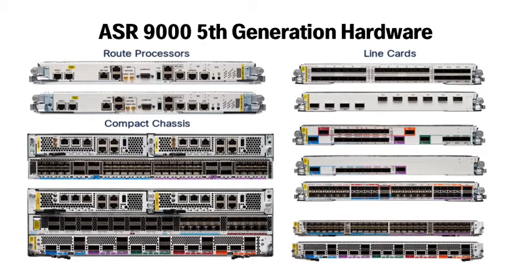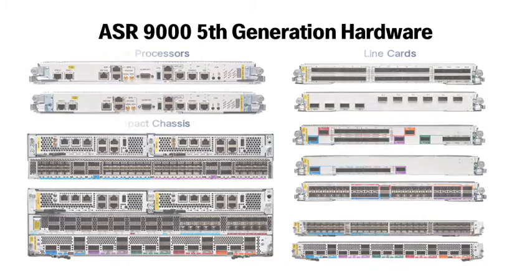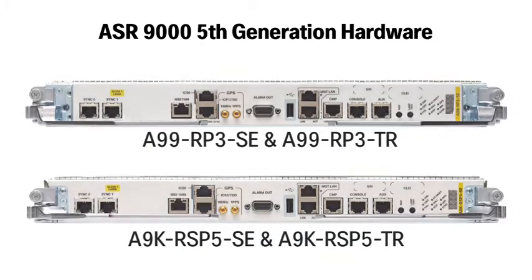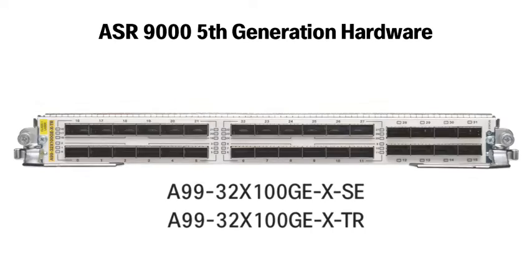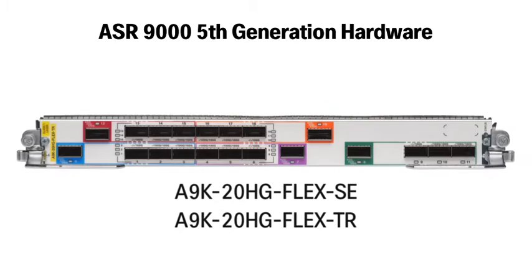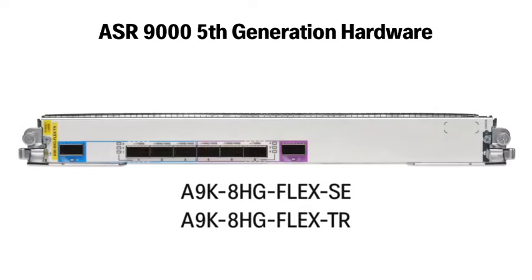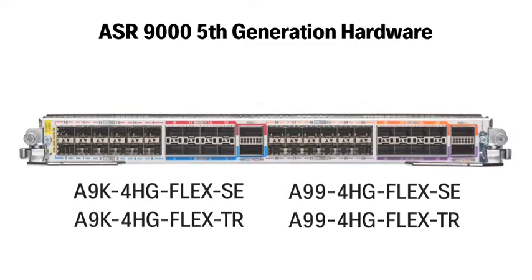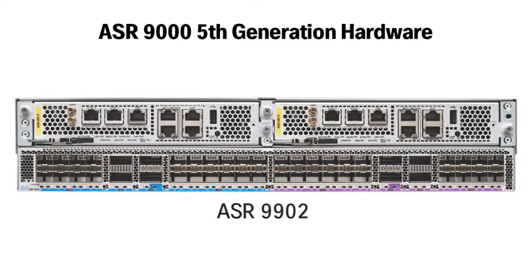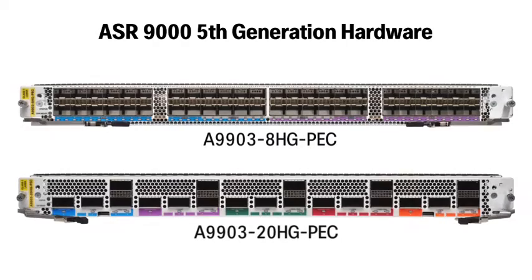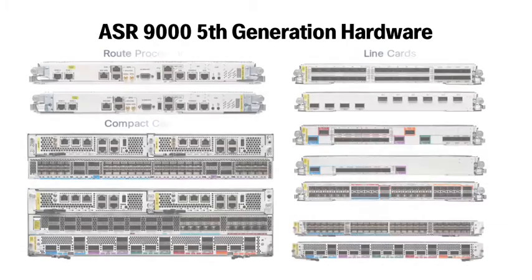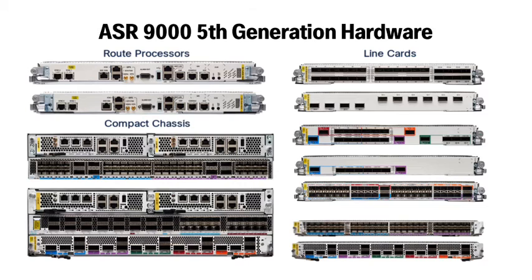Hi, welcome to the ASR9000 channel. I'm Anna and in today's short video we're going to look at the latest fifth generation hardware in the ASR9000 product family. This includes all new route processors, new line cards that allow flexible combinations of a variety of port speeds, and also two new chassis in compact 2RU and 3RU form factors. All of this hardware is built using the fifth generation ASR9000 silicon. If you want more details, the data sheets are linked below in the description.